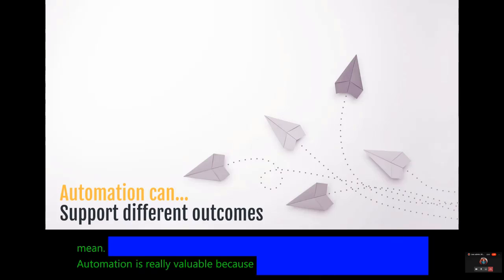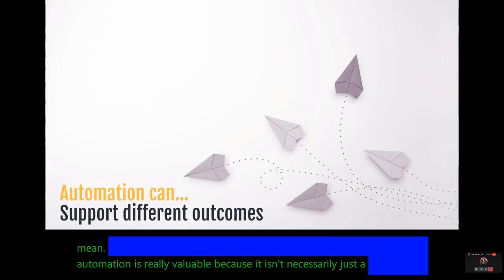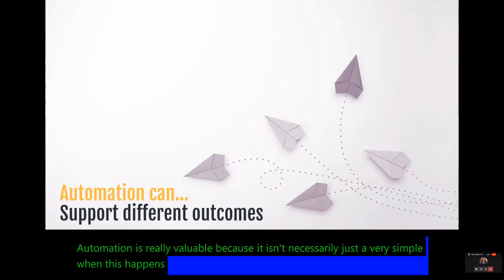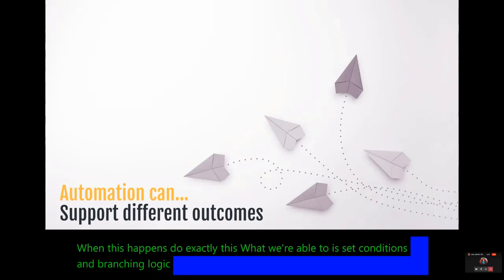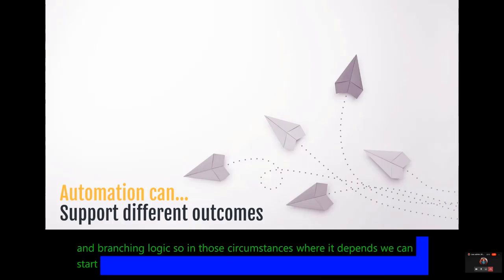Because it isn't necessarily just a very simple 'when this happens, do exactly this.' What we're able to do is set conditions and branching logic so that in those circumstances where it depends, we can start specifying how the system can handle that.